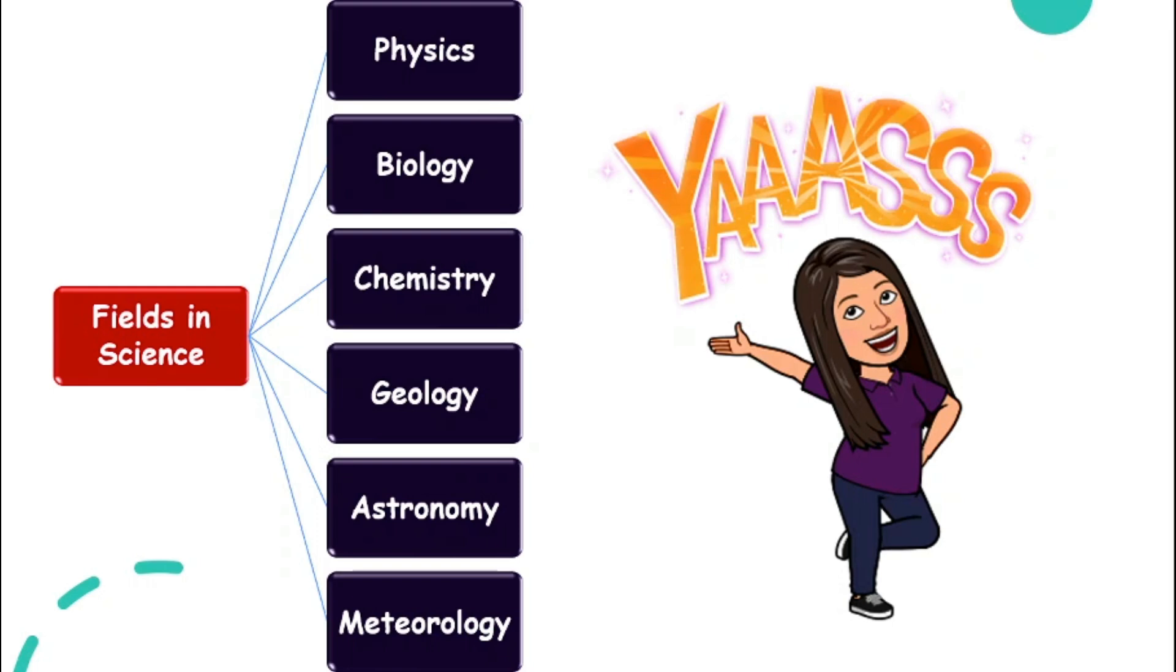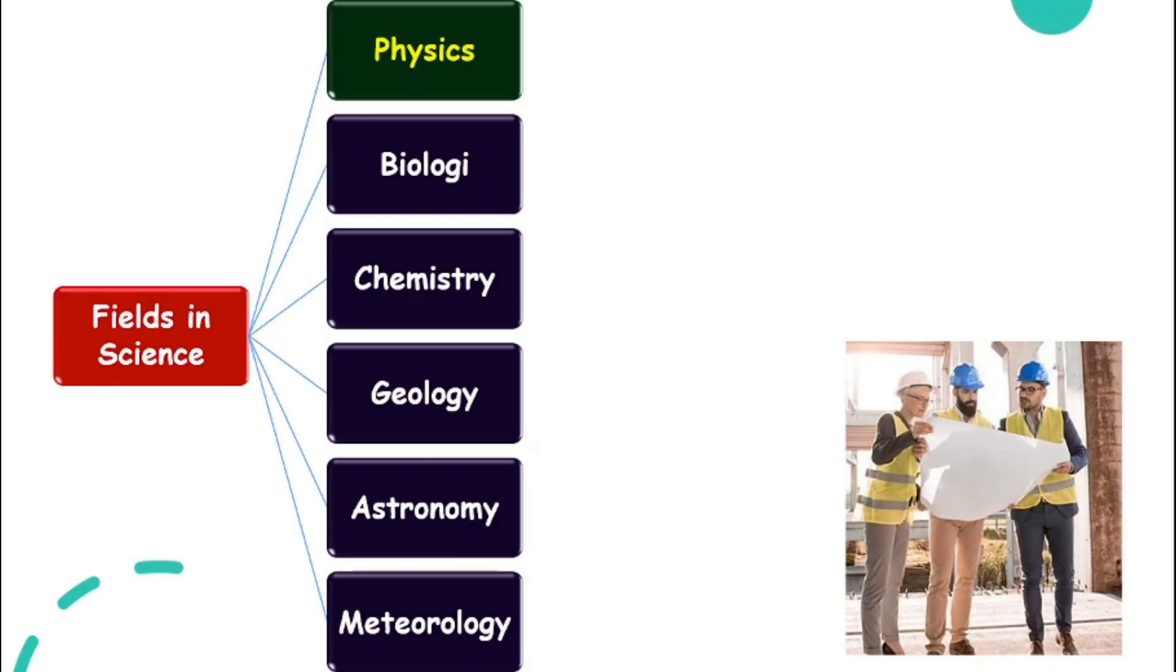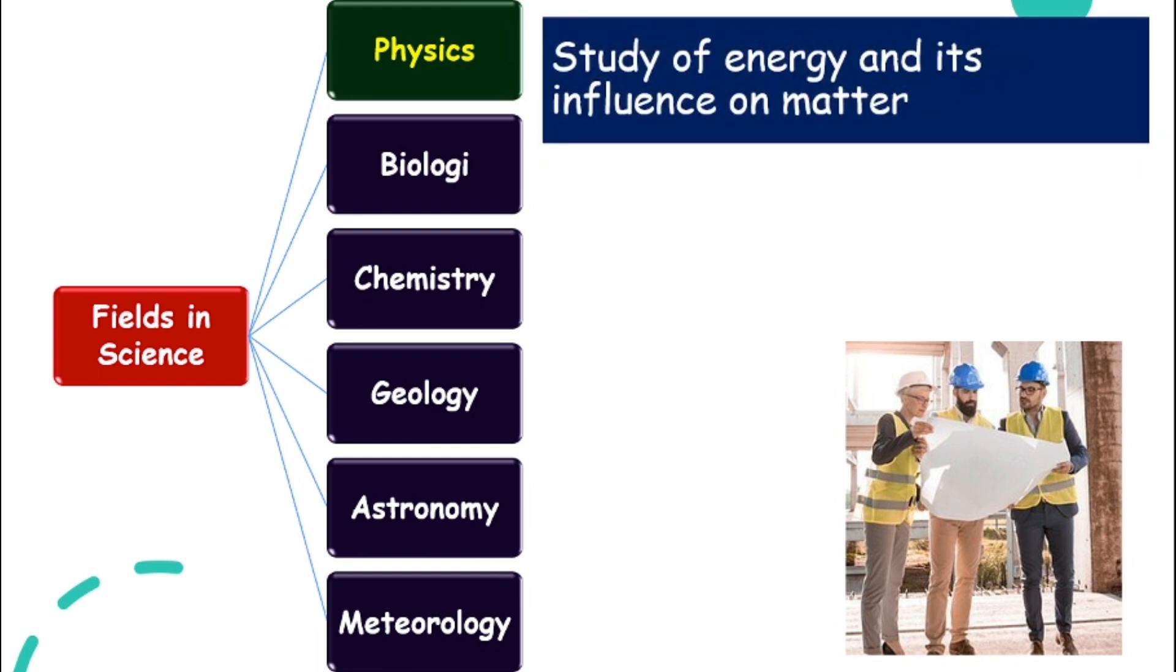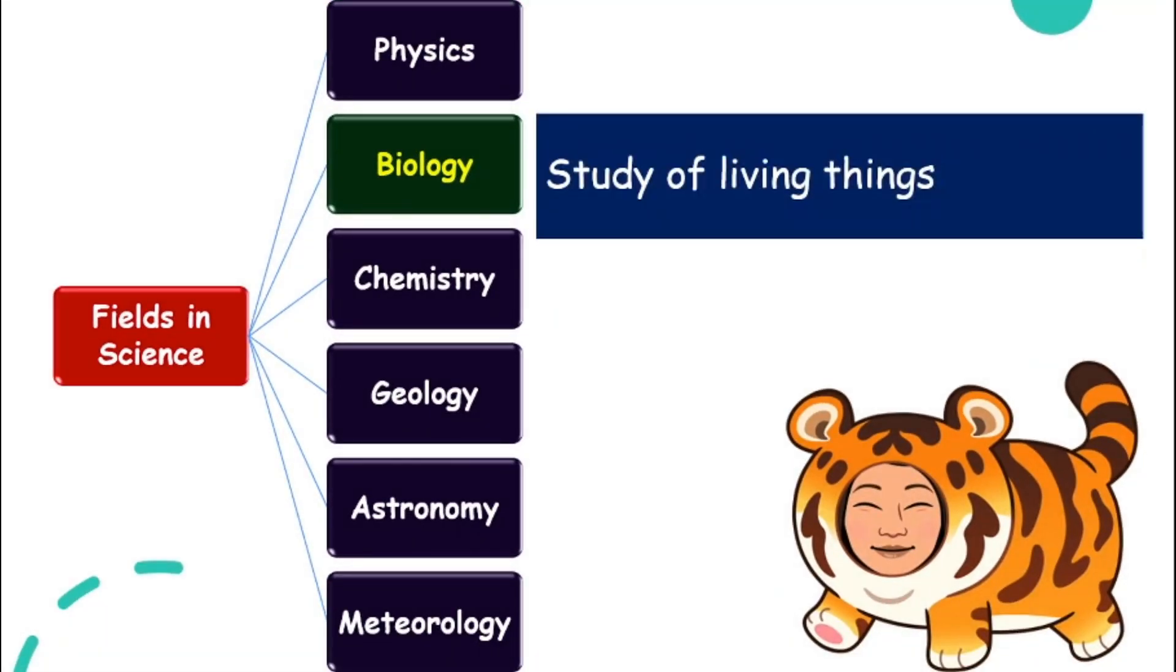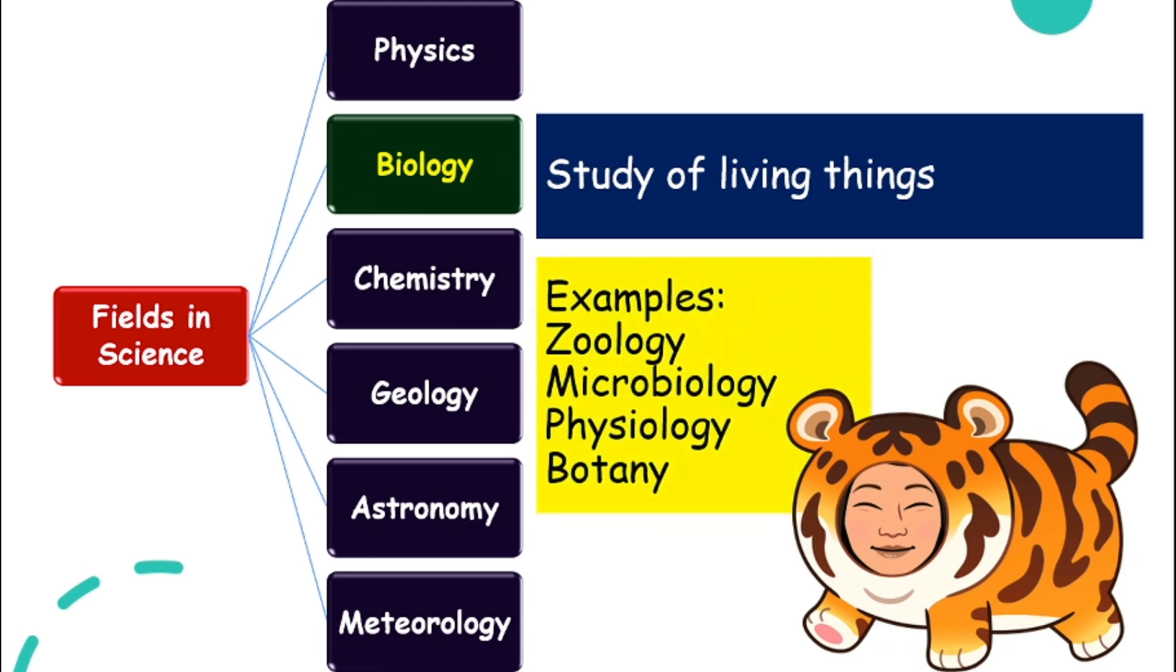Let's take a look at them one by one. Physics is a study of energy and its influence on matter. For example, engineering. Biology is a study of living things. For example, zoology, microbiology, physiology, and also botany. It has to do with things that is alive, whether it's plants or animals or microorganisms.